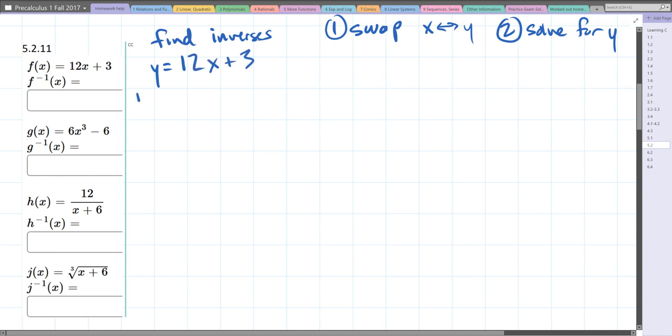Step one: swap x and y. So we have x = 12y + 3. Now solve for y. We'll subtract 3 and then divide by 12, giving us y = (x - 3)/12. This is f inverse of x.